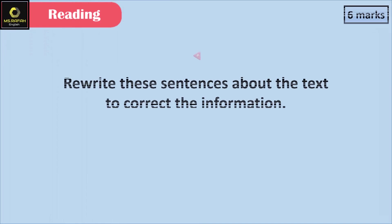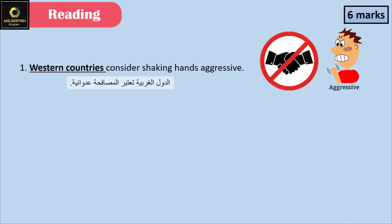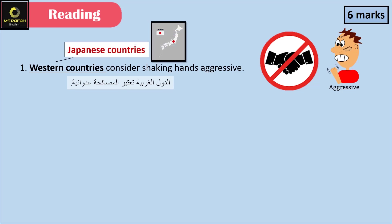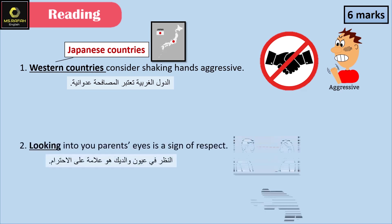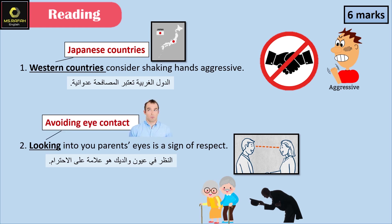Question C. Rewrite these sentences about the text to correct the information. 'Western countries consider shaking hands aggressive.' Corrected: Japanese countries consider shaking hands aggressive. 'Looking into your parents' eyes is a sign of respect.' Corrected: Avoiding eye contact with your parents' eyes is a sign of respect in many parts of the world.